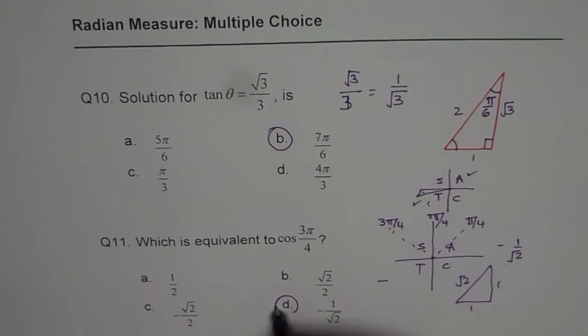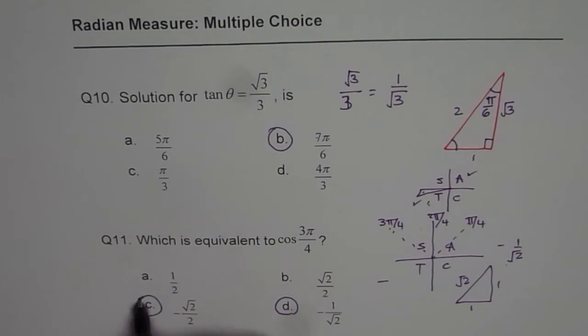So 1 over square root 2 with a negative sign is the answer, which is option D. In this particular case, we have two solutions because C is also the same thing. There could be a typing error.